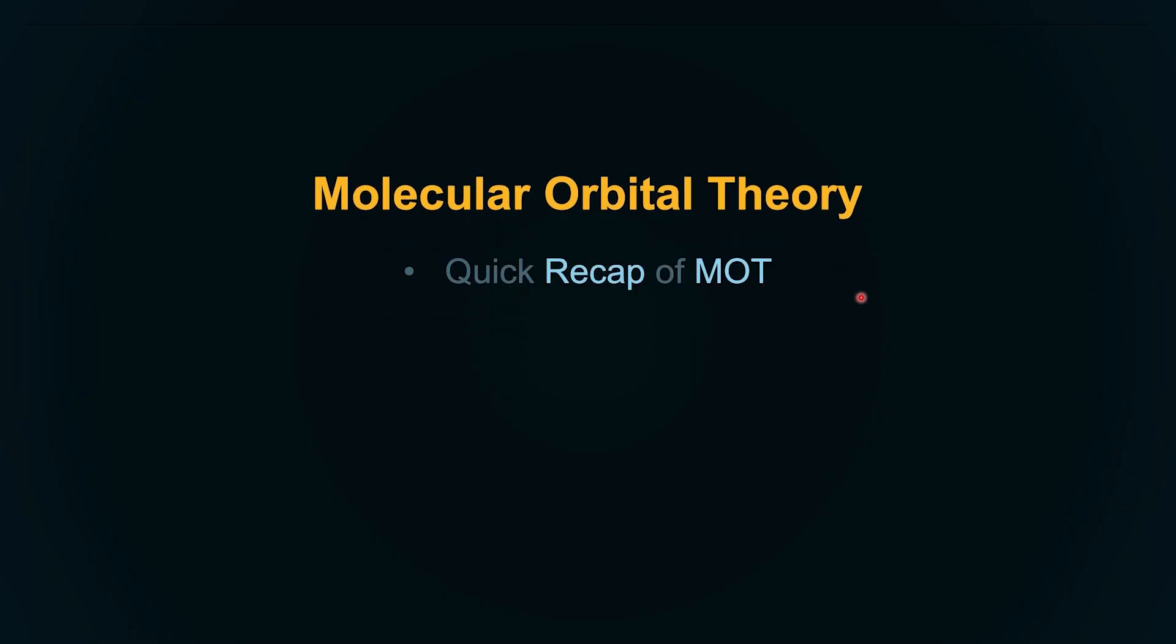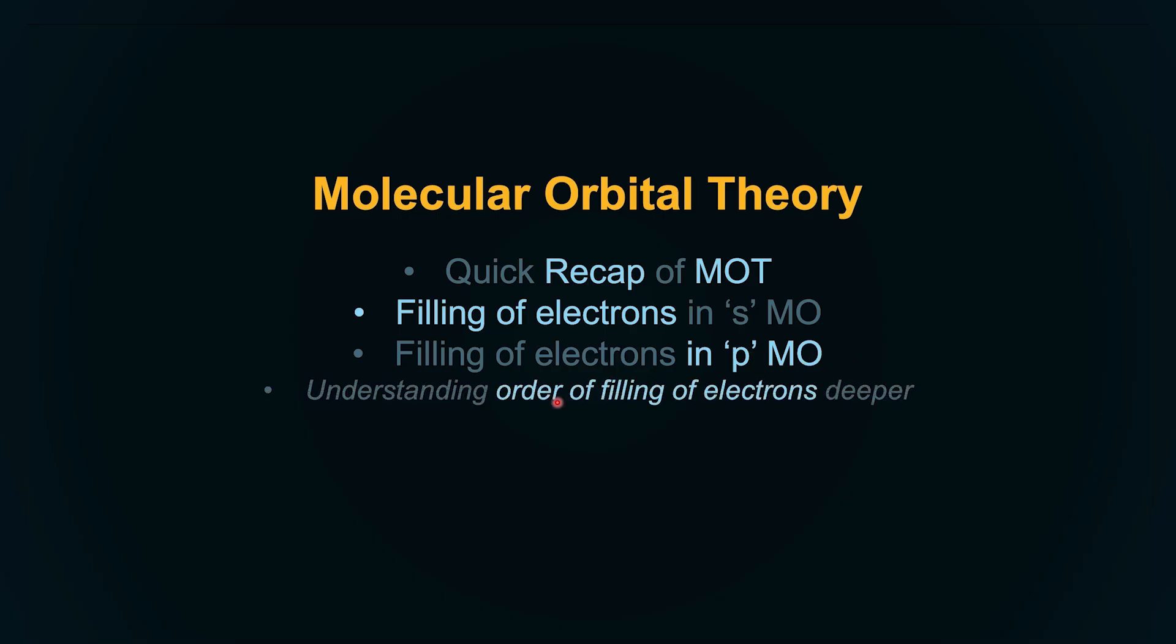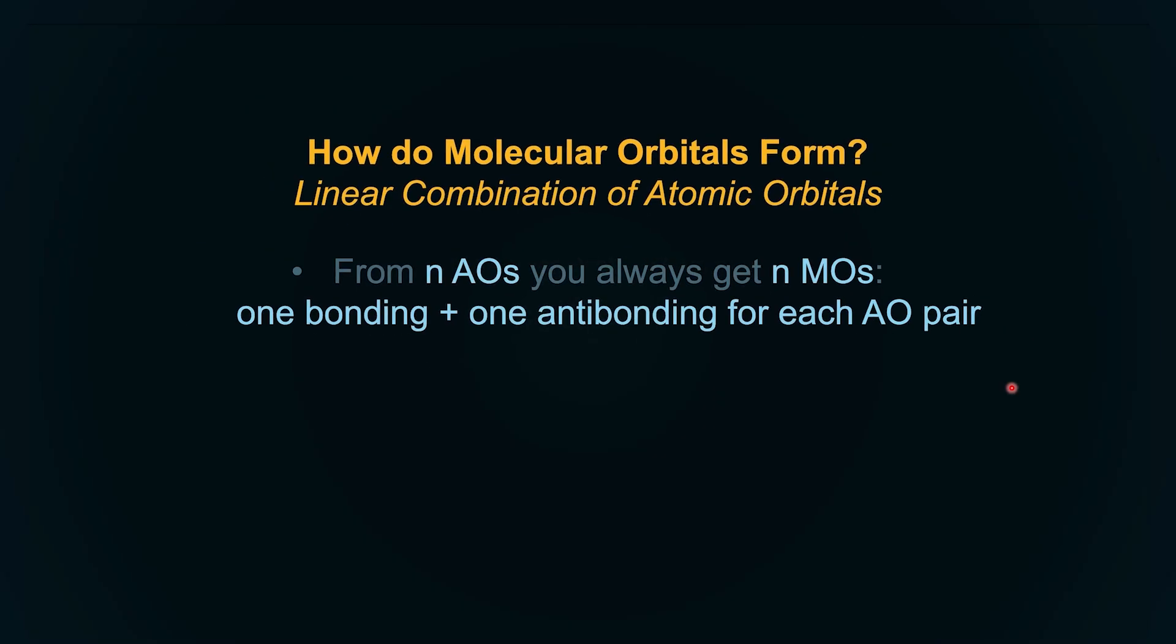If you haven't understood stuff, please go back and watch the basics of foundations of molecular orbital theory. In this video, we're going to cover a quick recap of MOT. We're going to understand filling of electrons in the S molecular orbitals, filling of electrons in the P molecular orbitals. And in this section, we're going to dive a little deeper. We'll understand the order of filling of electrons a little deeper than the S orbitals. And of course, we're going to look at what the inferences we can make from molecular orbital electronic configuration would be. All right, let's get to it.